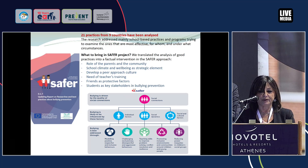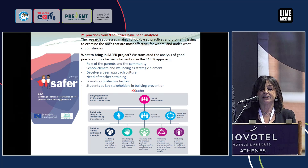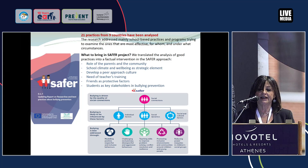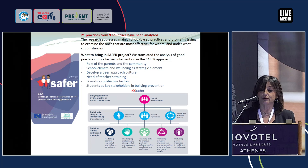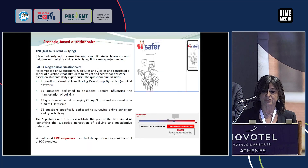These elements included: the role of parents in the community, the role of school climate and well-being as a strategic element, the developing of a peer approach culture, the need for continuous teachers' training, friends as protective factors, students as skills, and the role of stakeholders in bullying prevention.